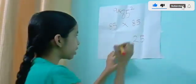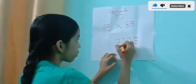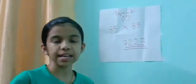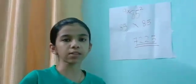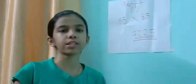9 eights are 72. So the final answer is 7225. So 85 square's answer is 7225.